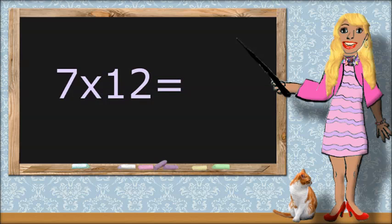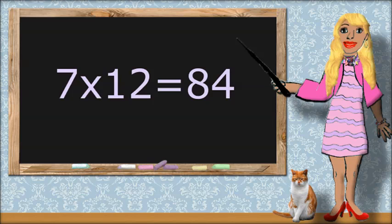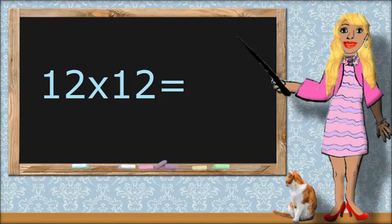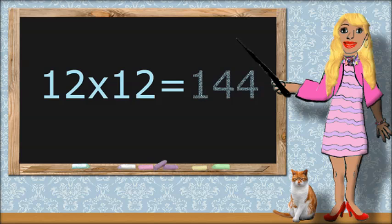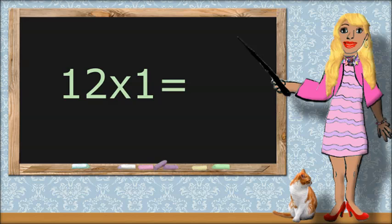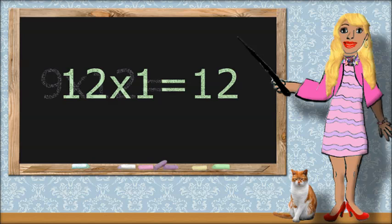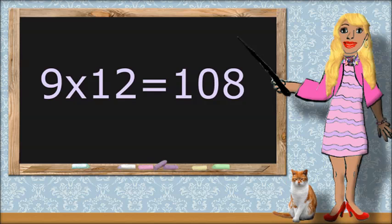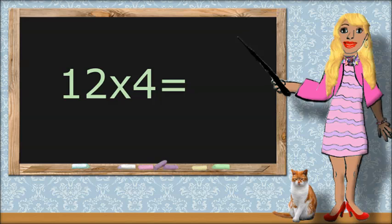7 times 12 equals 84. 12 times 12 equals 144. 12 times 1 equals 12. 9 times 12 equals 108. 12 times 4 equals 48.